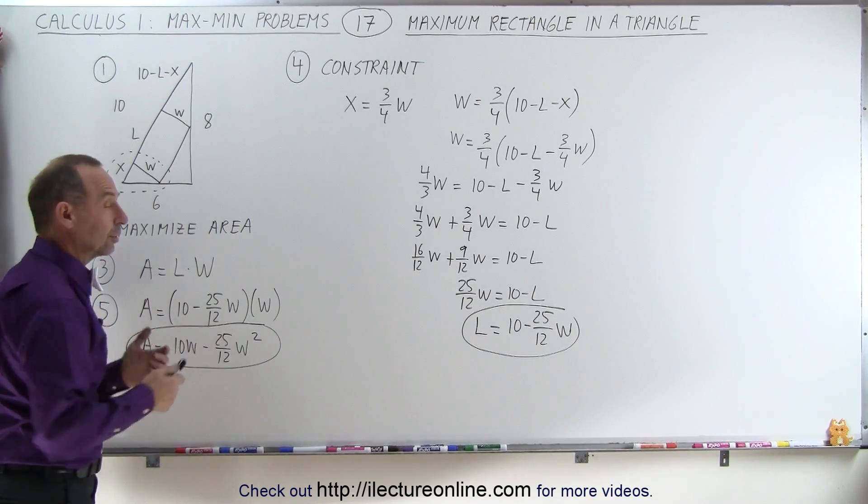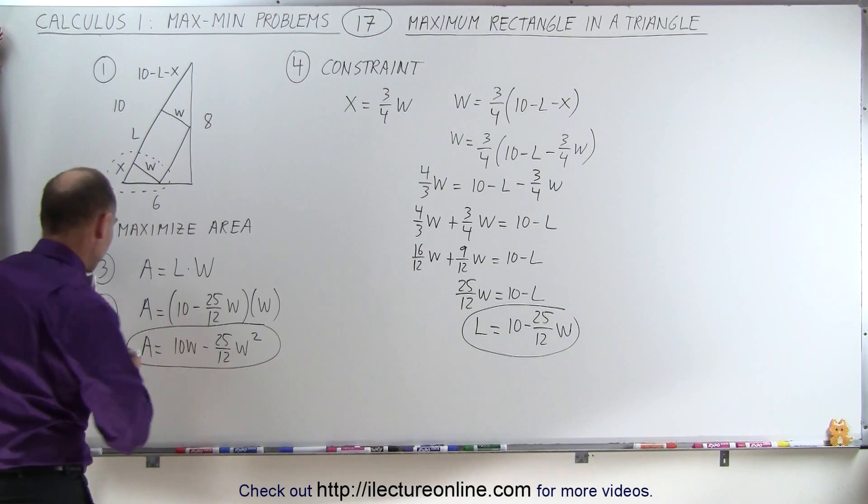So now we have an equation where we have the area which we're trying to maximize in terms of W alone. Now we can go to the next step where we take the derivative and set the derivative equal to 0.